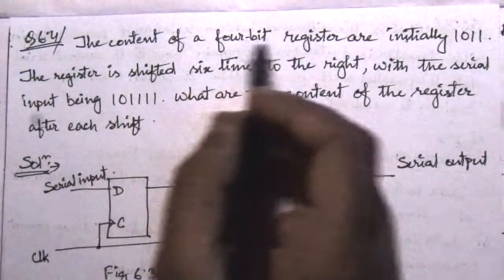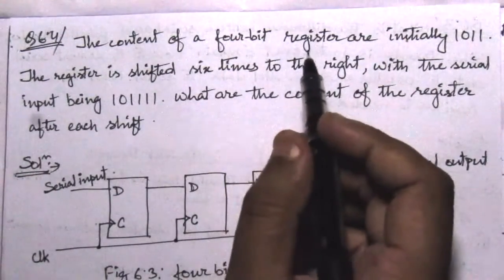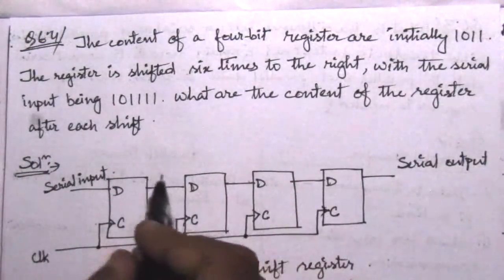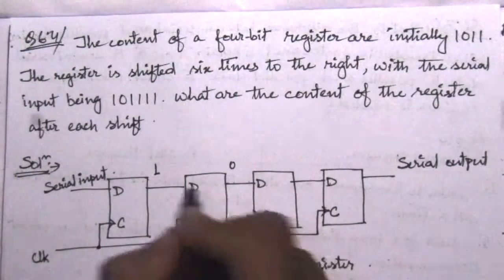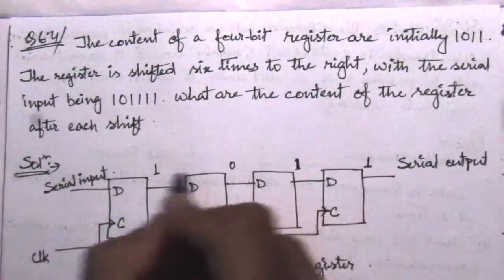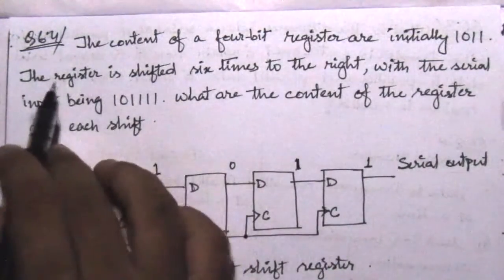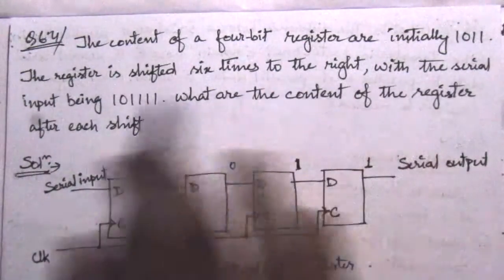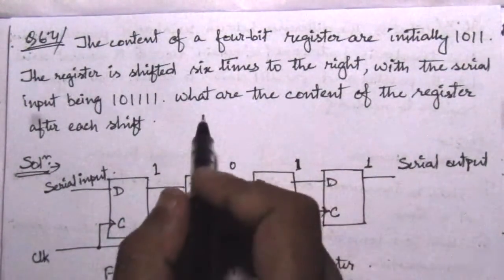The problem states: the contents of a 4-bit register are initially 1011. This 4-bit register has four flip-flops. The initial outputs are 1, 0, 1, 1. This is a serial shift register because the register is shifted six times to the right with a serial input.